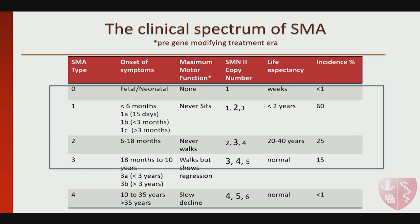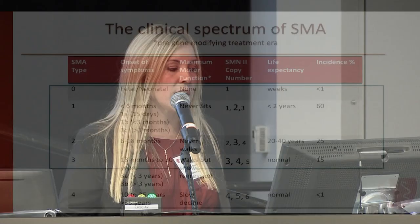Type 2 patients are able to sit but never walk, presenting between 6 and 18 months of age, typically with three SMN2 copies, and life expectancy now extended to between 20 and 40 years. Type 3 patients can present between 18 months and 10 years, subdivided into 3a — onset before three years — and 3b. These patients walk but may show regression at various times. They most commonly have three or four SMN2 copies, with normal life expectancy.